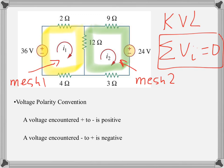But applying KVL to each mesh, we also need to consider voltage polarity. So how does it work? The voltage encountered from plus to minus is assigned as positive, and voltage encountered from minus to plus is assigned as negative.